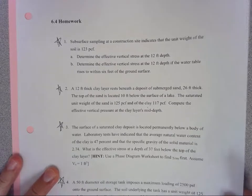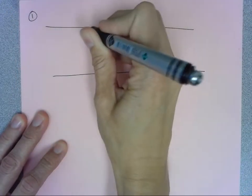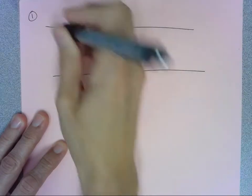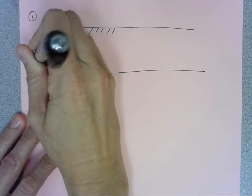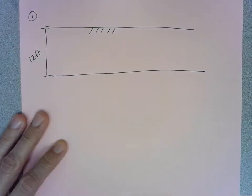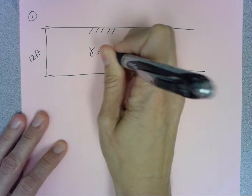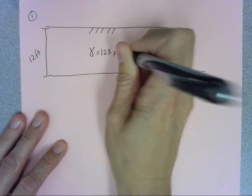So I'm going to go ahead and draw that scenario out since it's given to you as a word problem and not with the soil profile that we've seen in our book, but you can just go ahead and make that soil profile yourself. We know it's 12 feet deep. We know that our soil is 123 pounds per cubic foot.